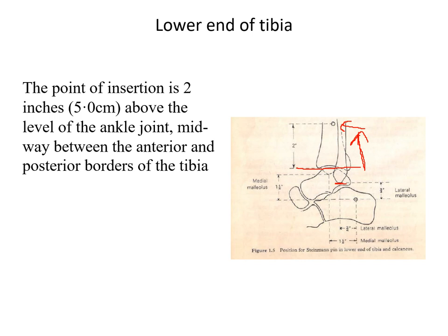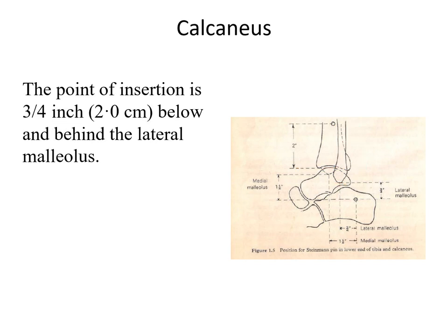For the lower end of tibia, the insertion point is 2 centimeters above the level of the ankle joint, midway between the anterior and posterior borders of the tibia — you take the ankle joint as your landmark and go 2 centimeters above it. For the calcaneum, you take the lateral malleolus as your reference point and go 2 centimeters below and 2 centimeters posterior to the tip of the lateral malleolus.